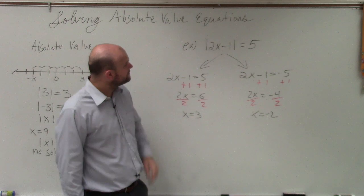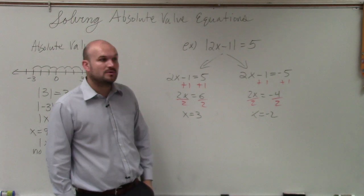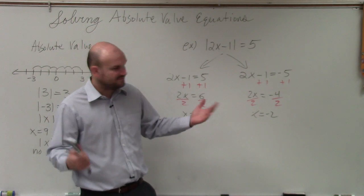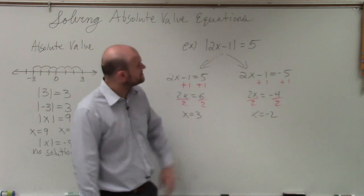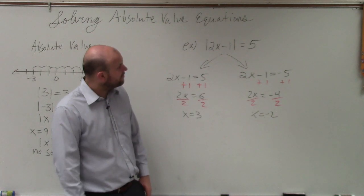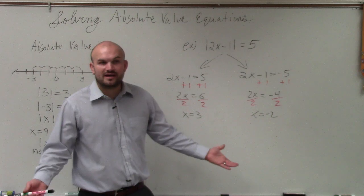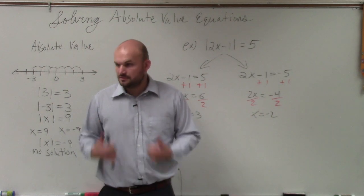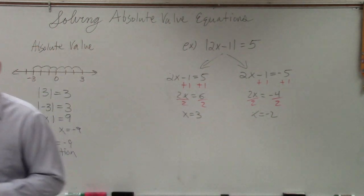So if I plug in 3, 2 times 3 is 6, 6 minus 1 is 5, absolute value of 5 is 5. Negative 2: 2 times negative 2 is negative 4, negative 4 minus 1 is negative 5, absolute value of negative 5 is 5. Works. Got it? OK.